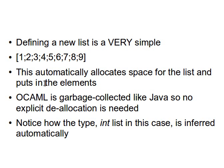OCaml automatically allocates space for the list and places the elements in there. OCaml has garbage collection just like Java, so there's no need to deallocate or free memory like we do in C — OCaml handles that automatically via its garbage collector. OCaml will also automatically infer the type of the list and know that this is a list of integers.